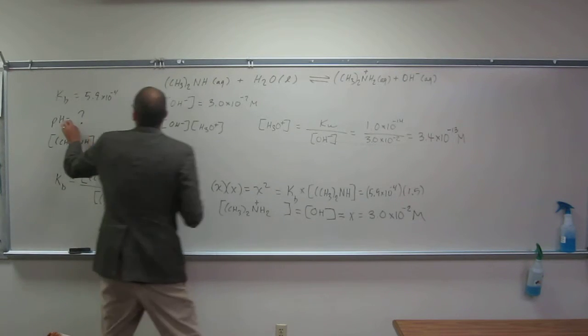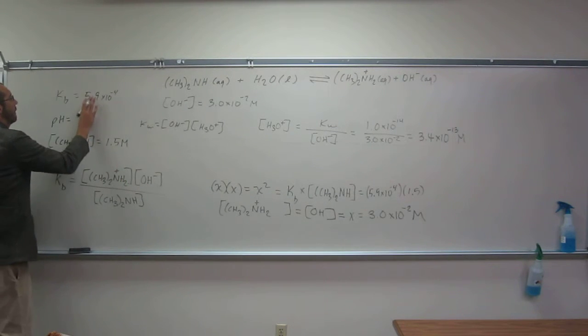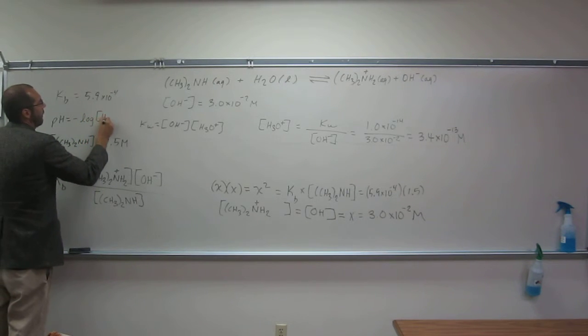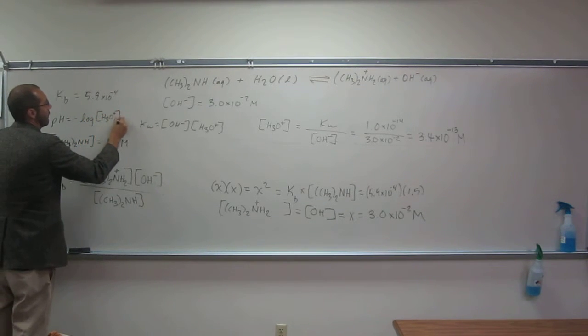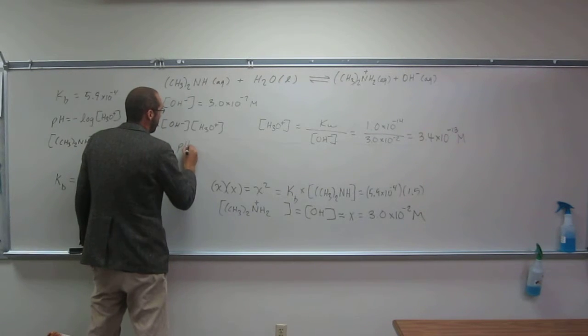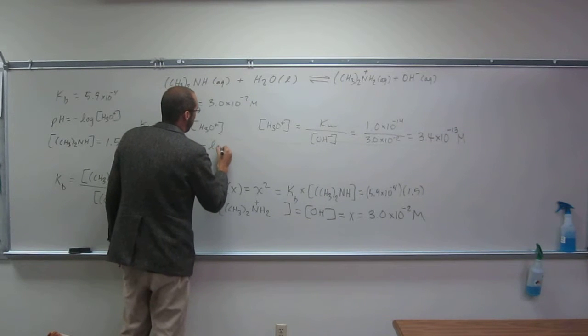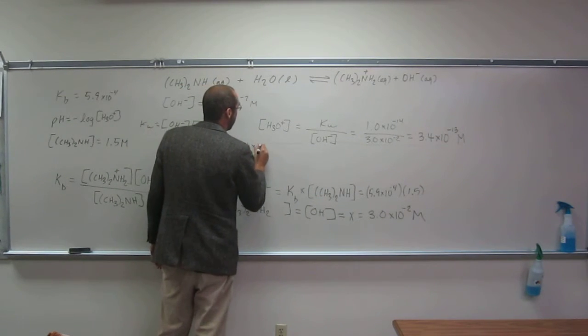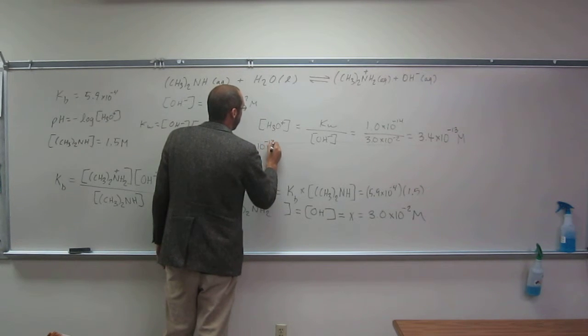So from that we get, remember the pH equals the negative log of the H3O plus concentration, okay? So pH is going to equal negative log of 3.4 times 10 to the negative 13.